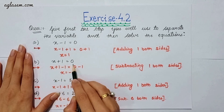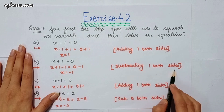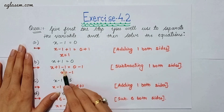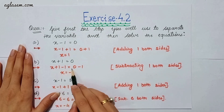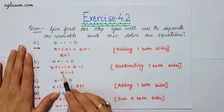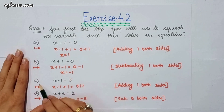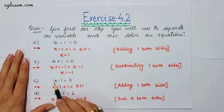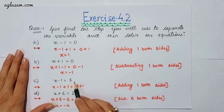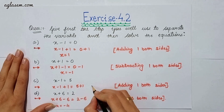So now we have to subtract 1 from both sides, that is x plus 1 minus 1 is equal to 0 minus 1, which gives x as minus 1. The third part says x minus 1 is equal to 5. Here we have to add 1 on both sides, so it will give you x is equal to 6.